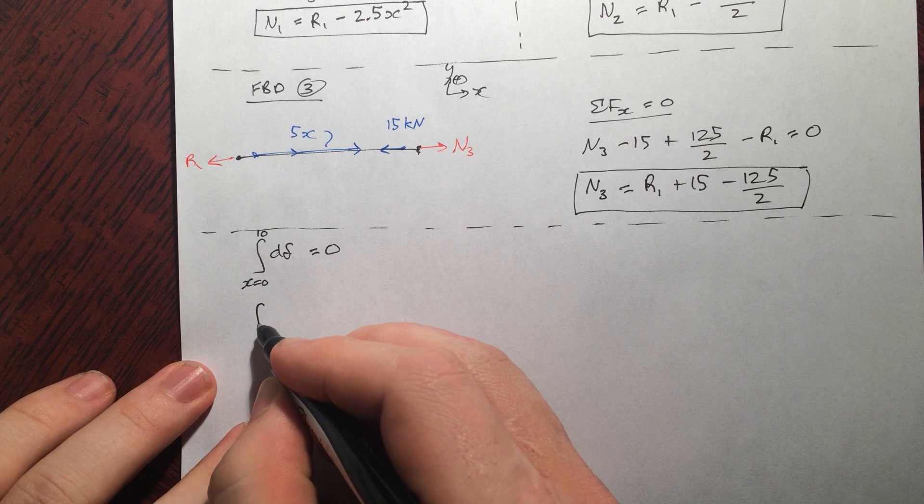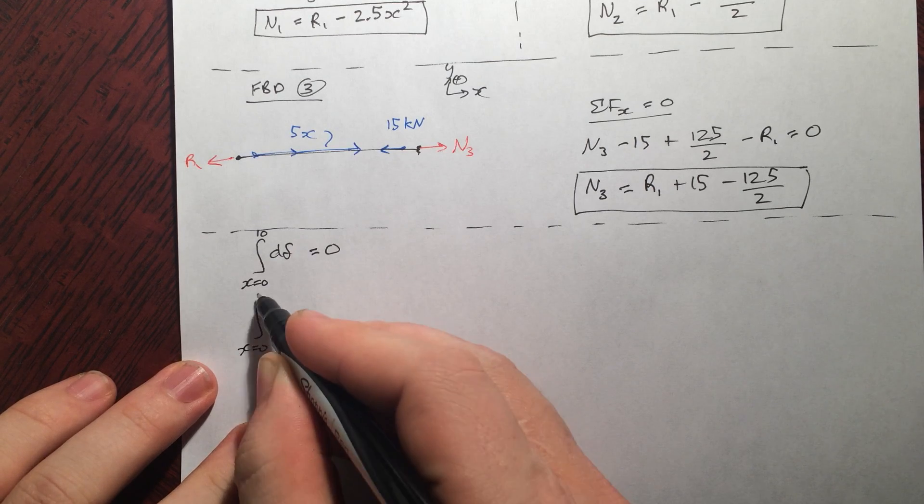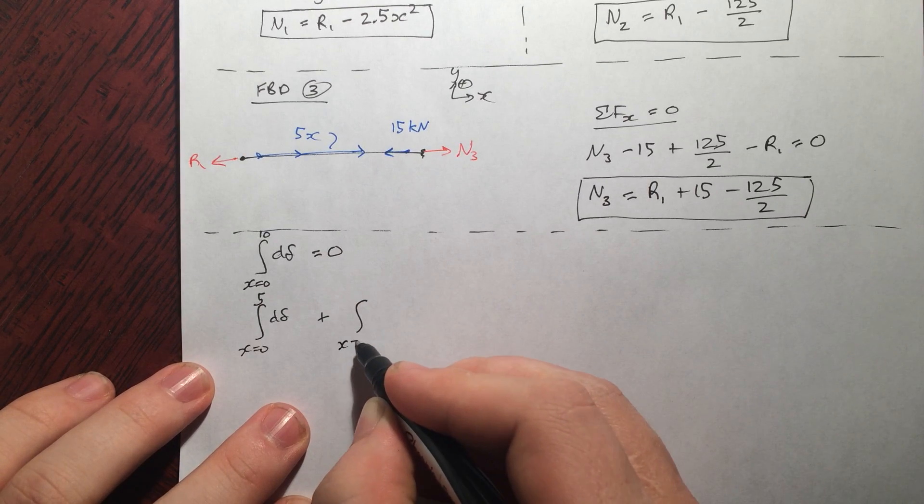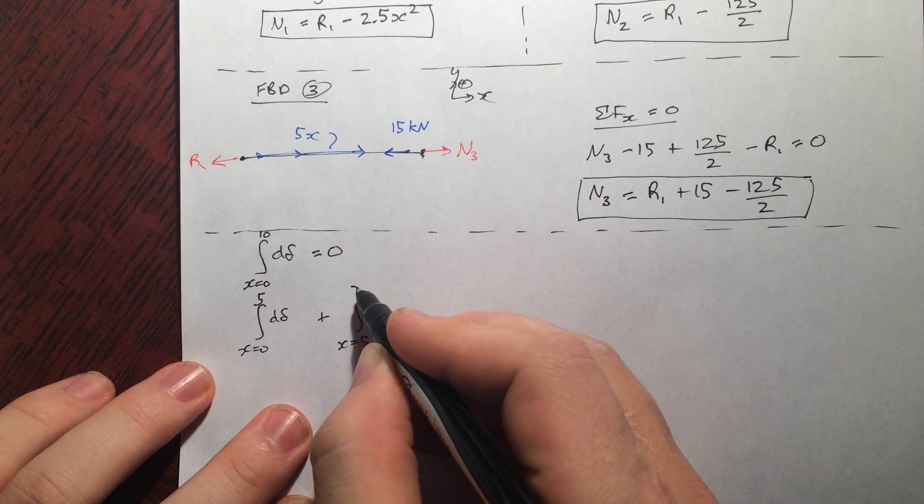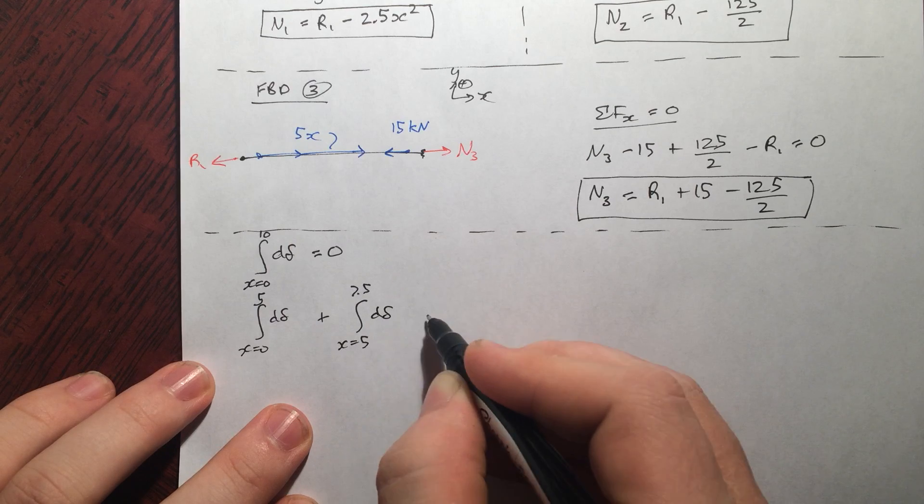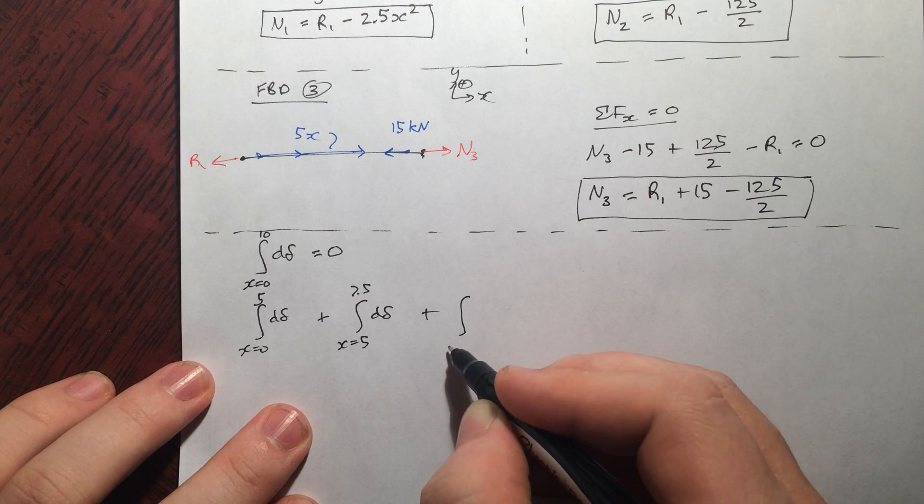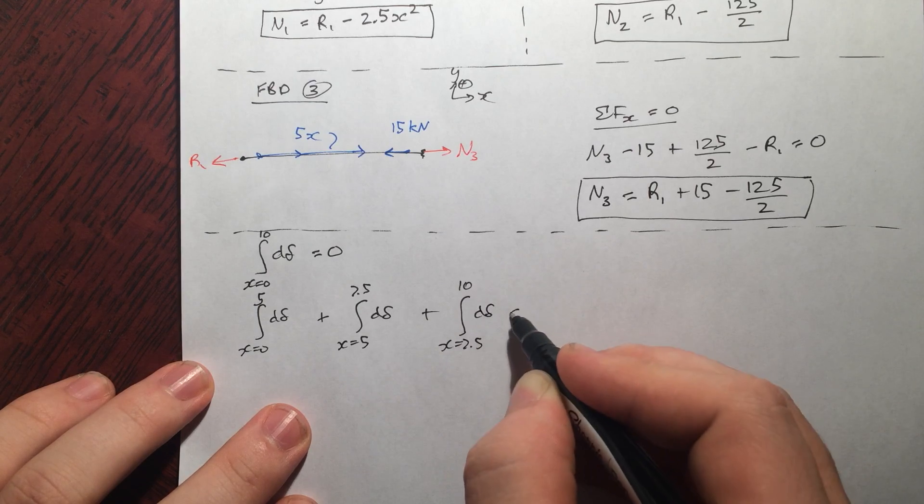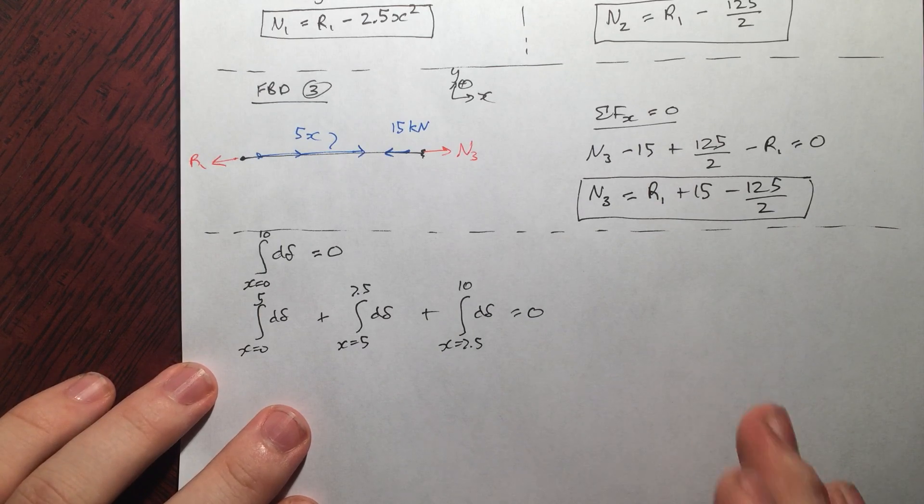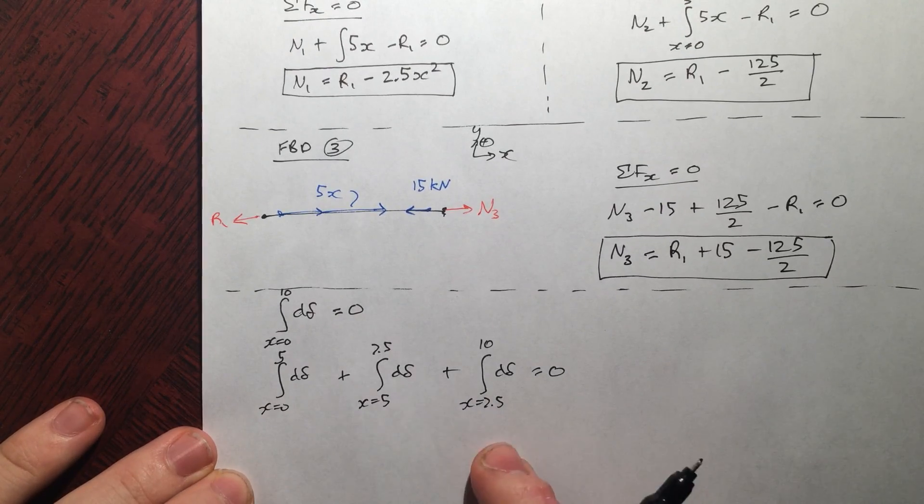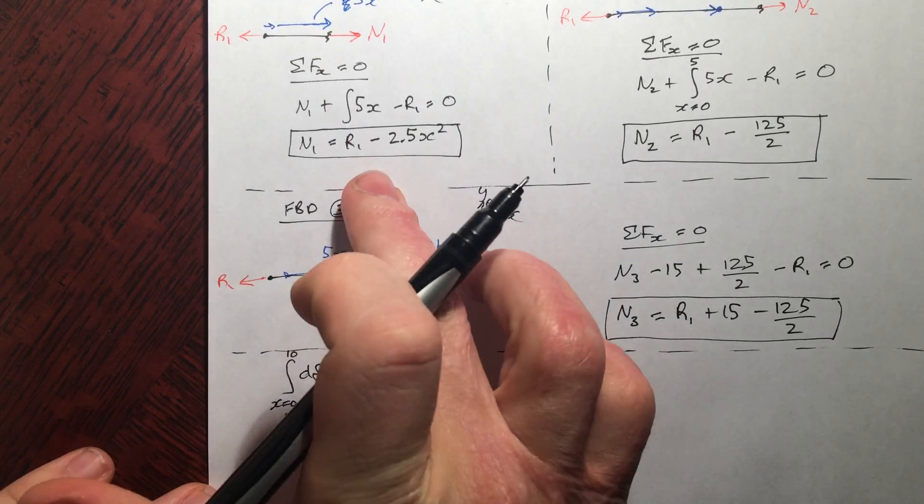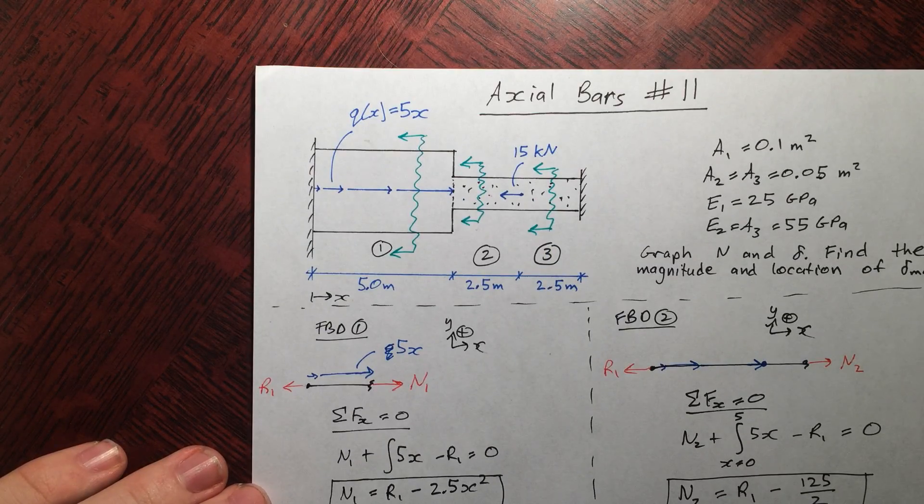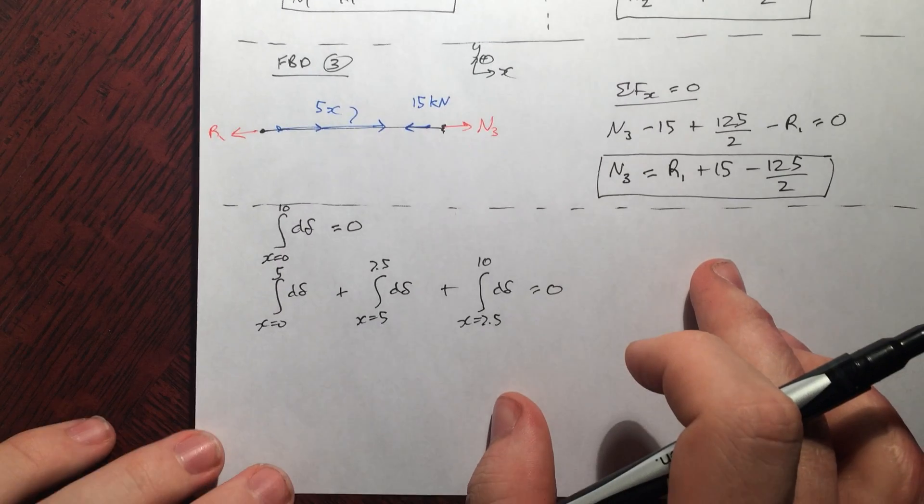And now we can rewrite that. If the sum of the forces between x equals 0 and 10 is 0, that means the sum of the forces x equals 0 to 5, the delta, plus the sum of the forces between x equals 5 and 7.5, plus x equals 7.5 to 10. You might be wondering why am I doing this. Well, if you look carefully, each one of these ranges here corresponds to each one of my internal normal forces and where they are acting on the bar. That's going to be useful.